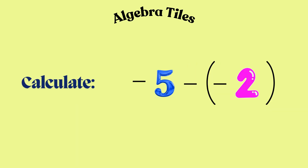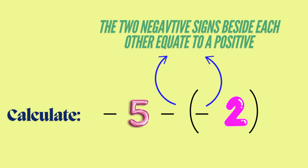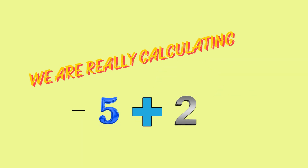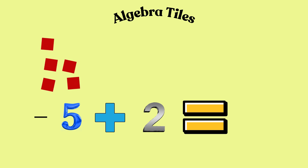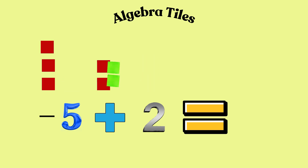Let's try calculating negative 5 minus negative 2. Note that the two minus signs immediately beside each other equates to a plus sign. Therefore, we are really calculating negative 5 plus 2. So we will use five red tiles for the negative 5 and two green tiles to represent the positive 2. The two green tiles will cancel two of the red tiles, leaving us with three red tiles. This means that negative 5 plus 2 is negative 3.